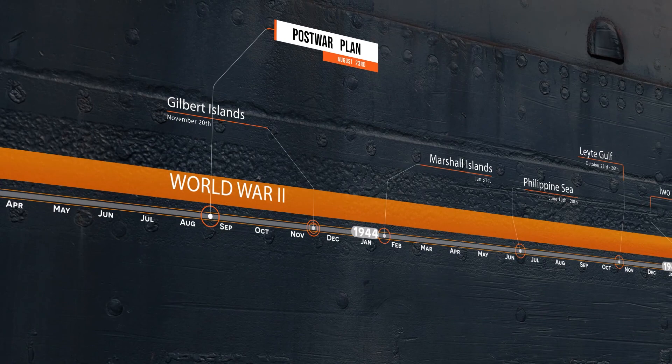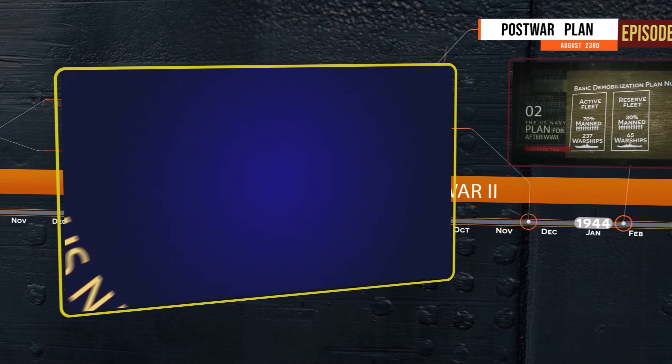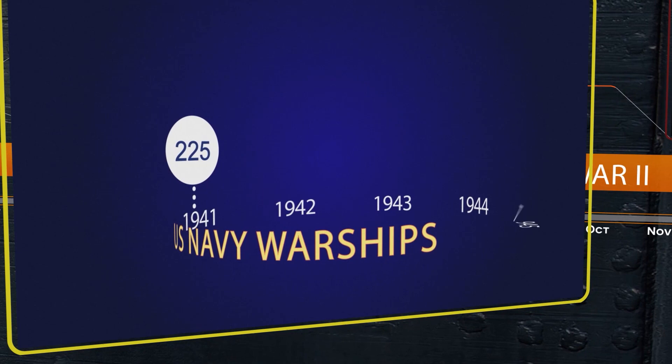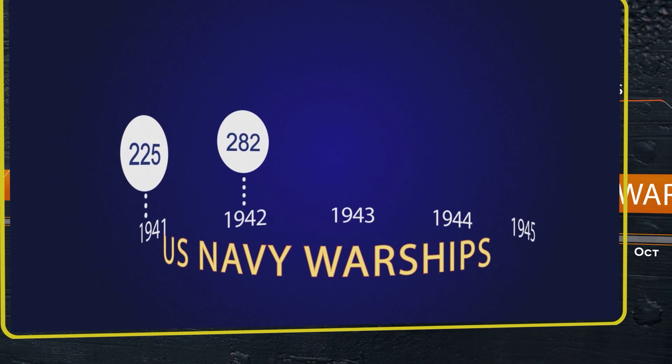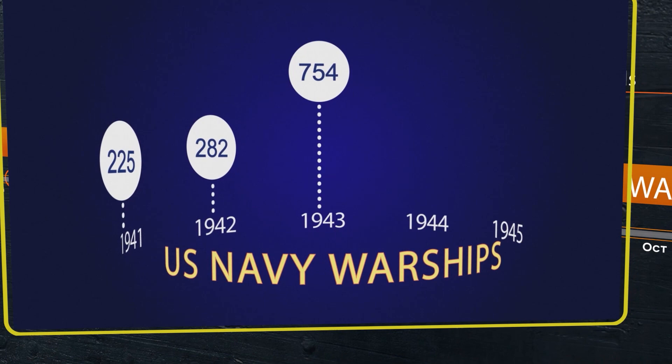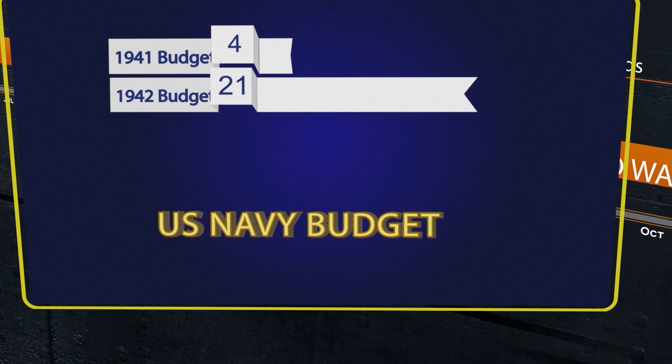The second episode of this series goes deeper on the development and application of this post-war plan. On the eve of Pearl Harbor, the U.S. Navy had 225 warships. A massive shipbuilding program was in progress and it would dramatically increase the amount of warships during the war. In 1942, the Navy had 282 warships. In 1943, it grew to 754, and then 1,054 in 1944.